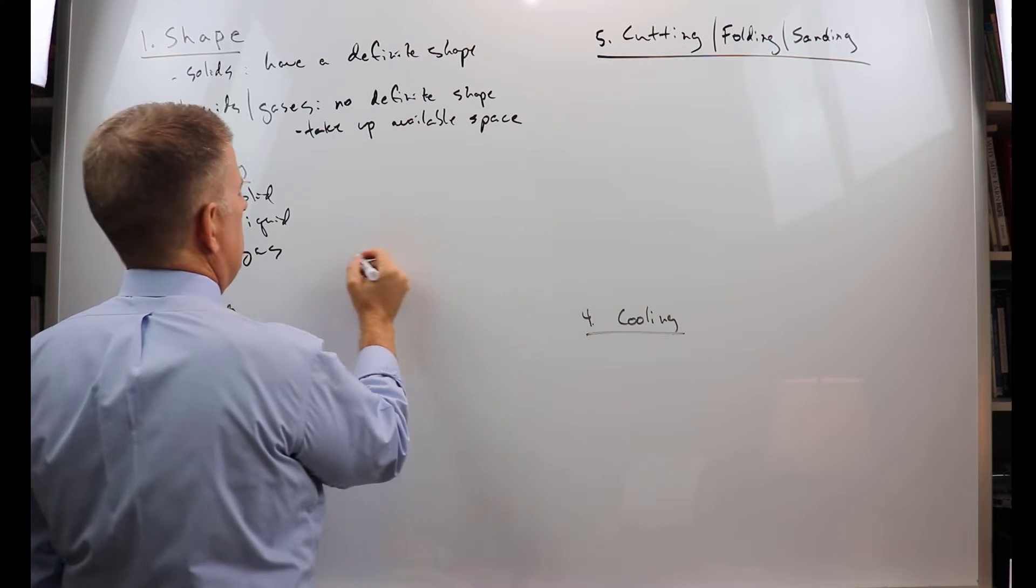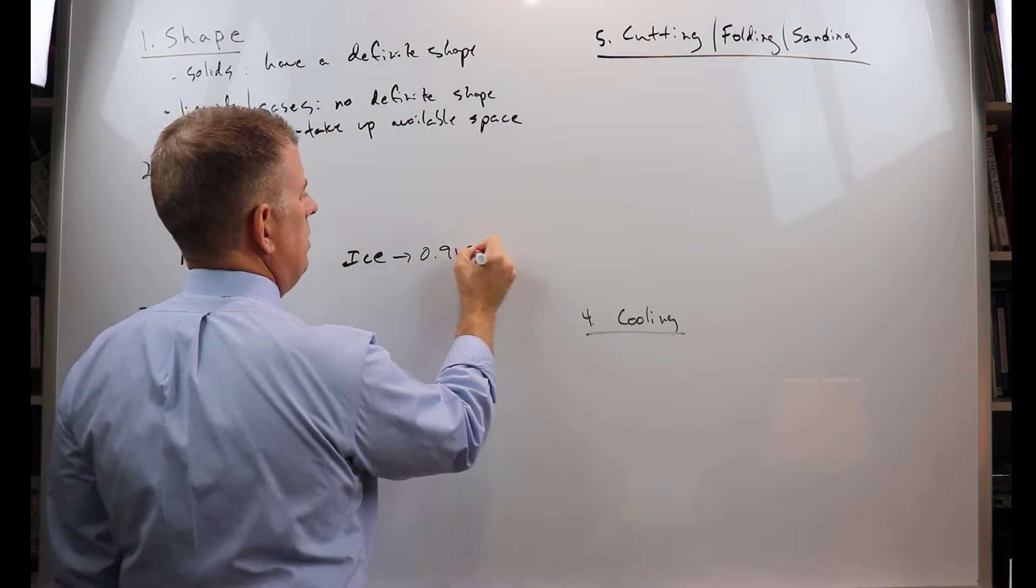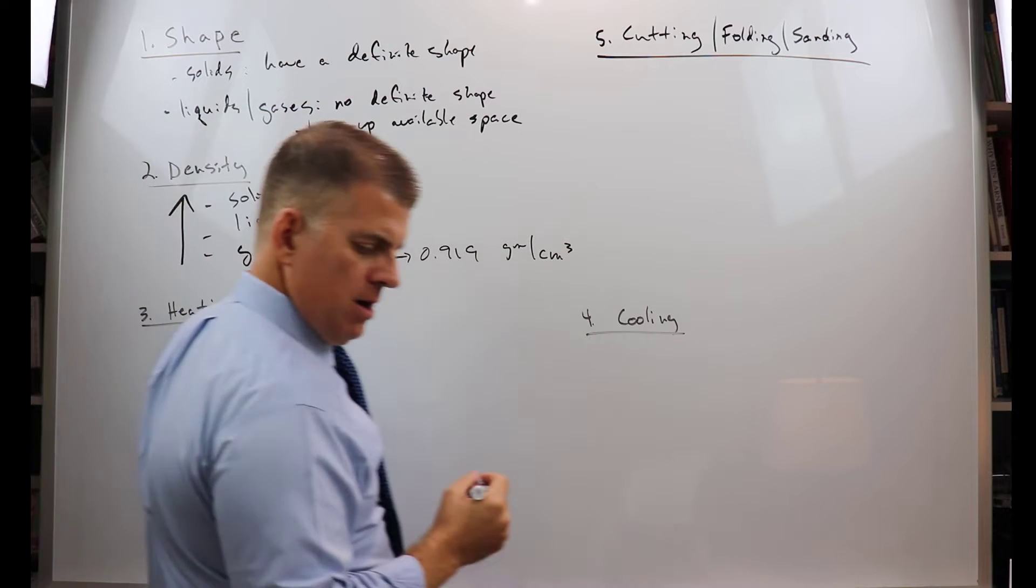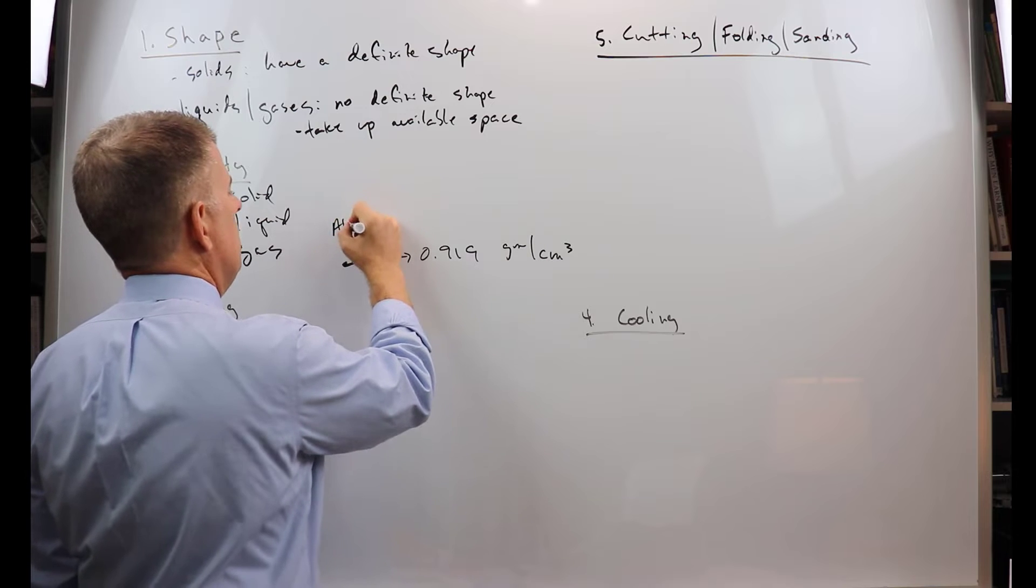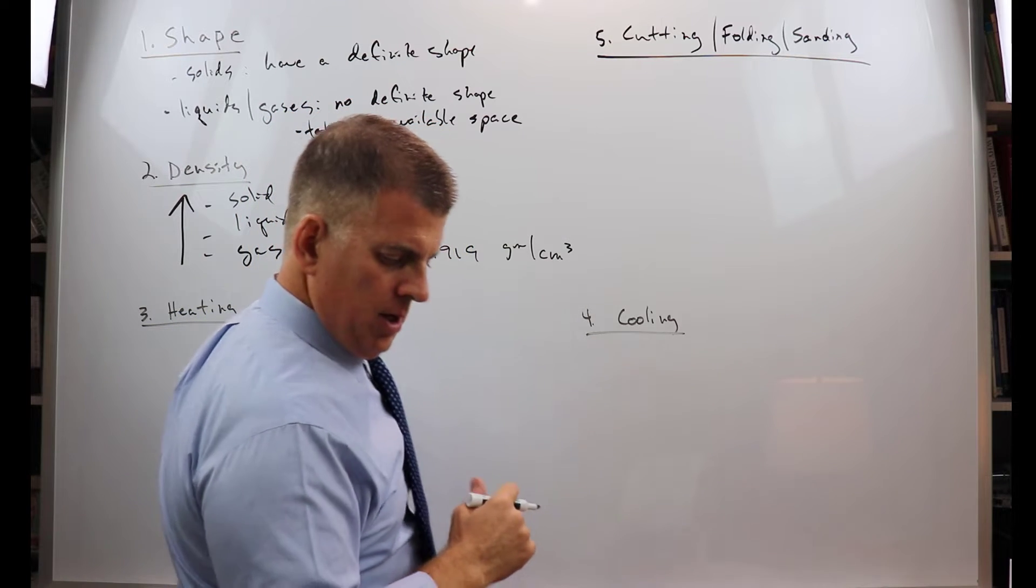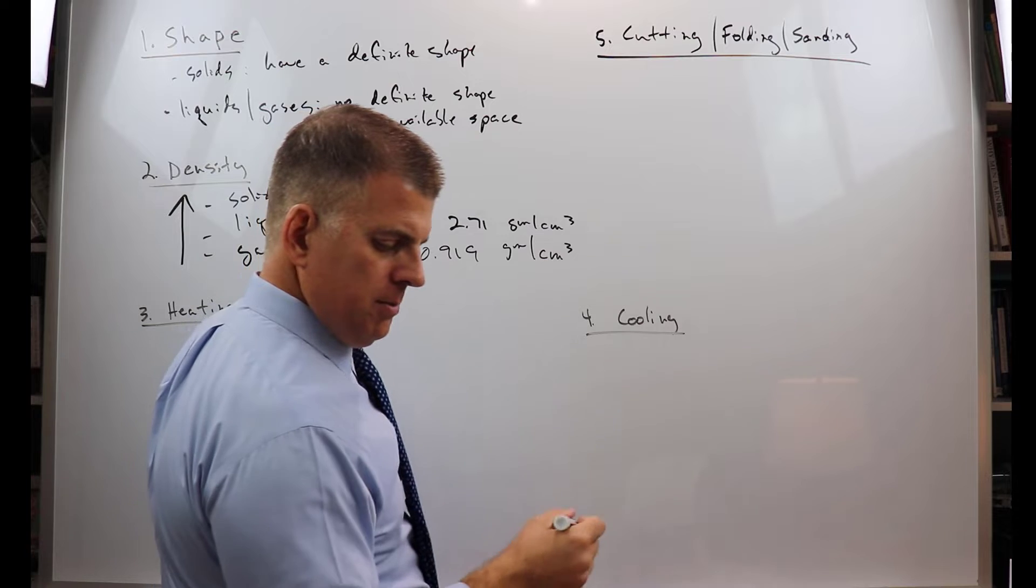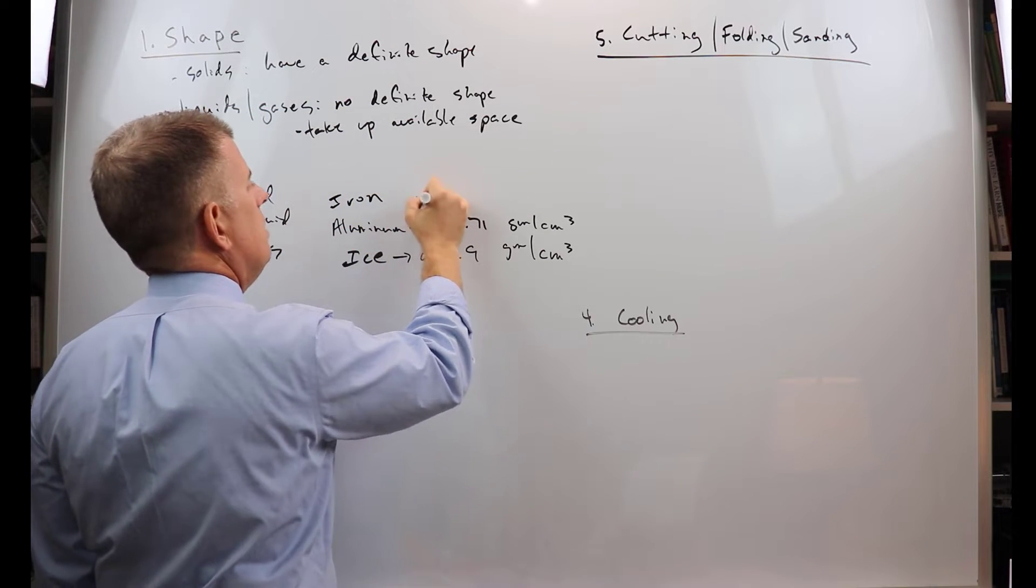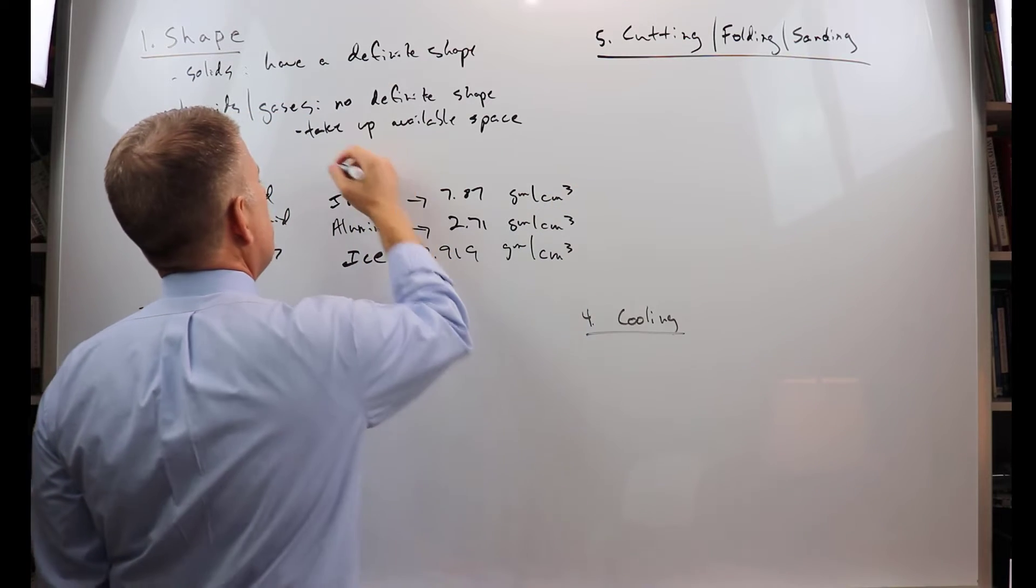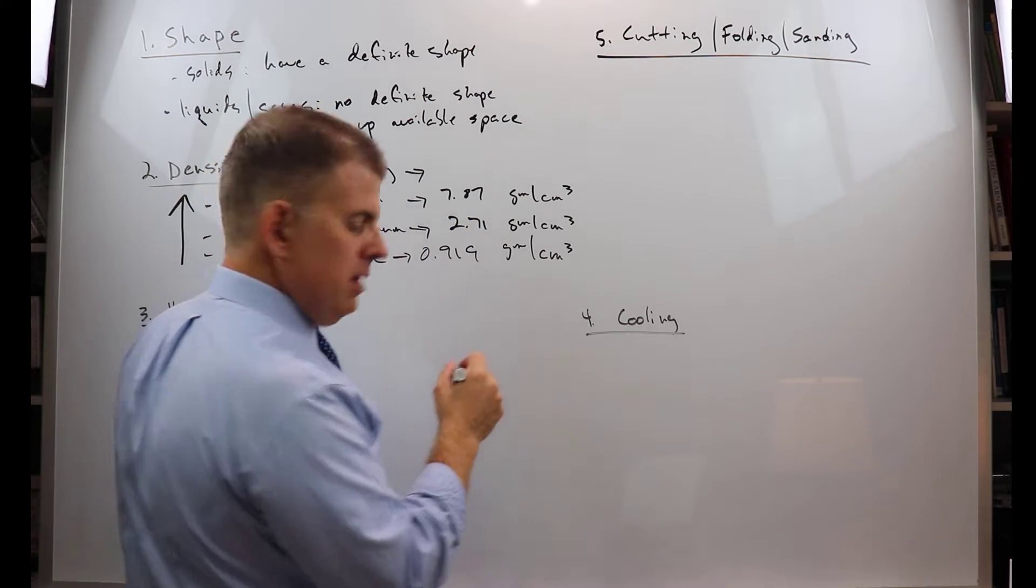I'll show you here. Let's take ice - ice has a density of 0.919 grams per cubic centimeter. Then we have something like aluminum - aluminum gets more dense. We're just talking about solids here, 2.71 grams per cubic centimeter. So it gets more dense. Iron, even more dense, 7.87 grams per cubic centimeter. But then if I throw in mercury, that's kind of weird - that's the liquid metal mercury. It's really super dense but it's a liquid, 13.69 grams per cubic centimeter.